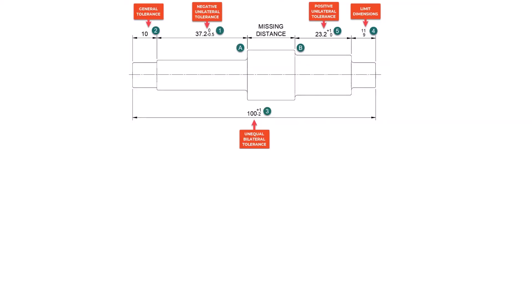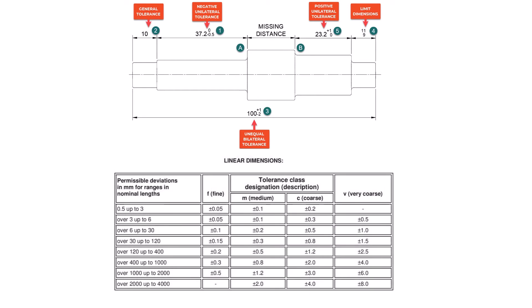General Tolerance. Dimension number two has no visible defined tolerance, but that does not mean there is no tolerance defined. Usually, the standard for general tolerances is defined in the title block of the drawing — most often stated as ISO 2768. Please do not make the mistake of forgetting about general tolerances. If we look up the ISO 2768 tolerance table, the equal bilateral tolerance for dimension number two is 10 ± 0.2 millimeters.